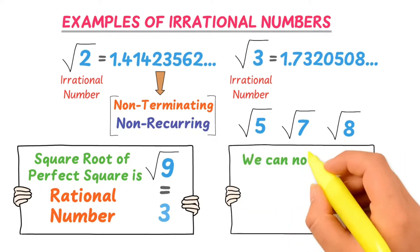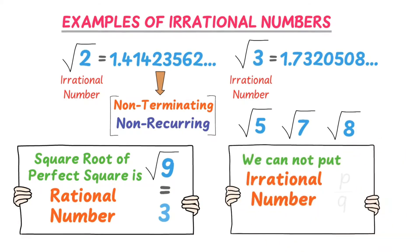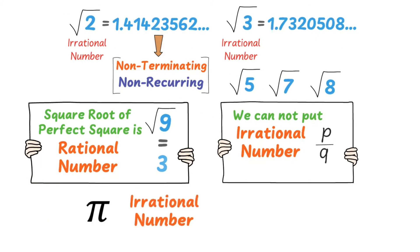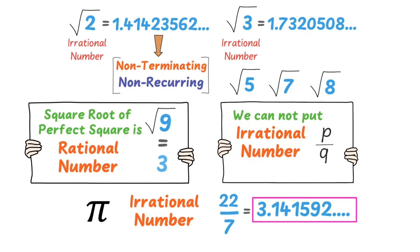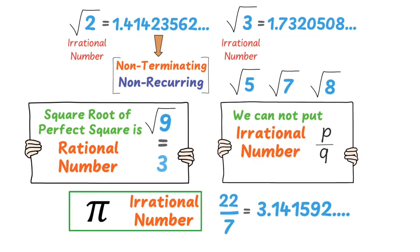Note that we cannot put irrational numbers into p/q form. Finally, remember that pi is an important irrational number. Even though we can write an approximation as 22 divided by 7, its actual value 3.141592 goes on, making it a non-terminating and non-recurring decimal. Therefore, pi is an irrational number.